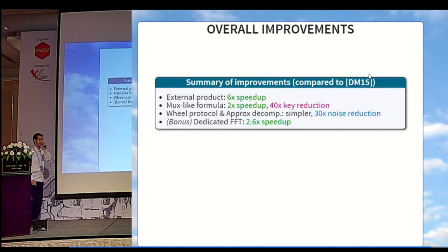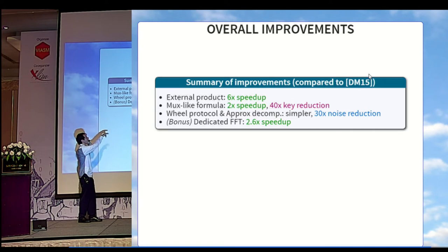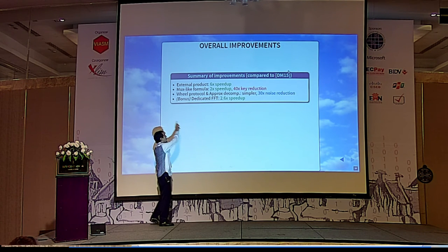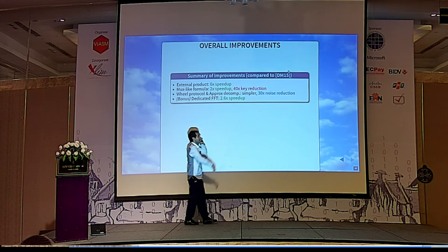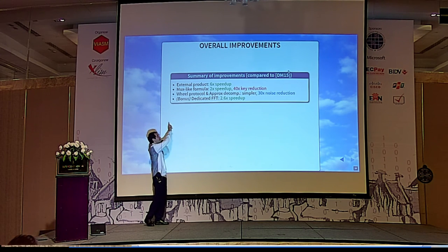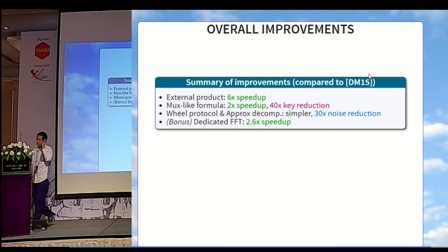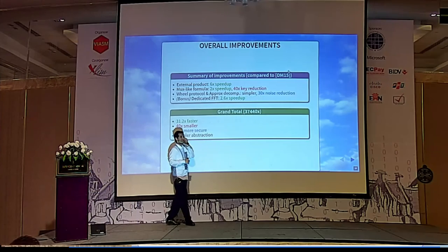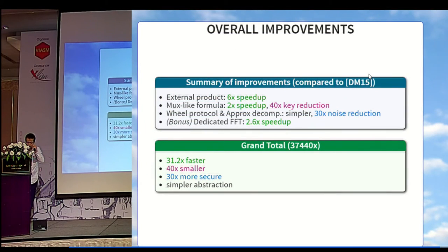Taking the summary of all the speed-up improvements: we get a factor 6 thanks to the external product, a factor 2 in time for the MUX-like formula, and also a factor 40 in key size reduction. The description with the wheel protocol and the fact that there is no test vector gives us a 30x noise reduction and a much simpler abstraction. As a bonus, not in the paper, we implemented a dedicated FFT which gives an additional 2x speedup. Multiplying all these numbers together, we improved the scheme of Ducas-Micciancio — which was already an amazing scheme — by a factor of 37,000, and also get a much simpler abstraction.